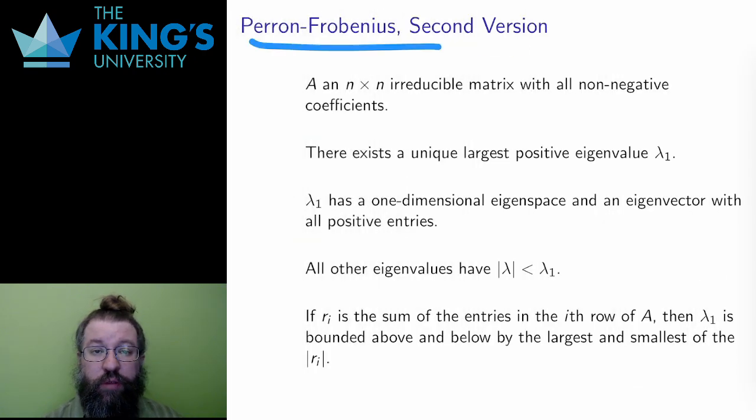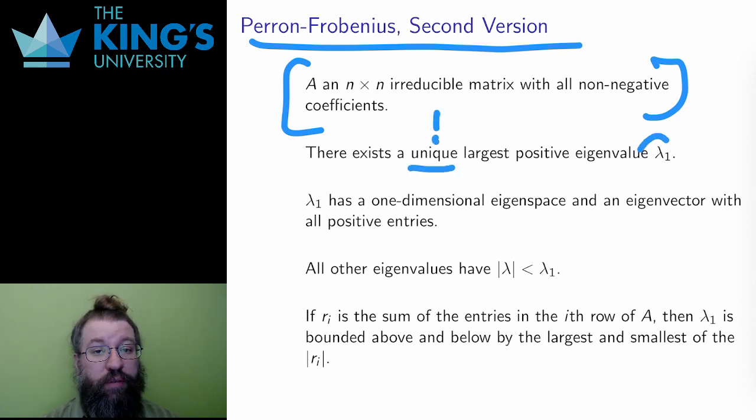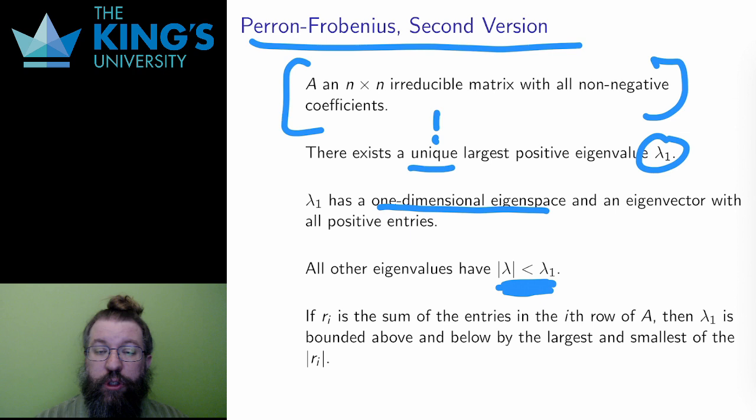Using the definition of an irreducible matrix, here is a stronger version of the Perron-Frobenius theorem. Let A be an irreducible matrix with non-negative coefficients. Then there is a unique largest positive eigenvalue with a one-dimensional eigenspace, and an eigenvector that has all positive entries. All other eigenvalues are smaller in absolute value. This is stronger in two ways. First, the inequality here is strict, which makes a huge difference. Second, there is a unique eigenvector which makes the system significantly easier to understand, as I shall show in future examples.